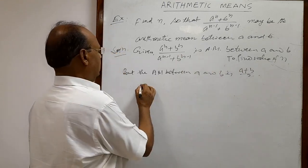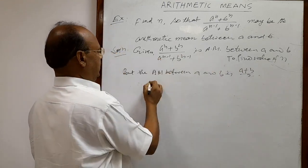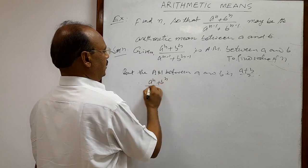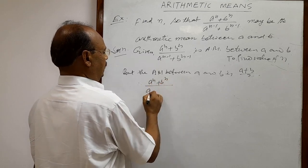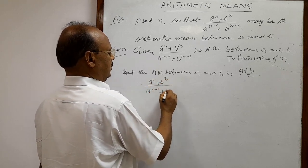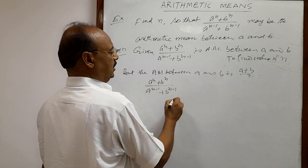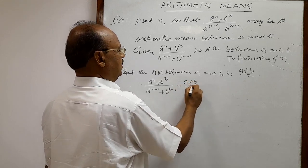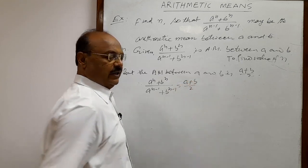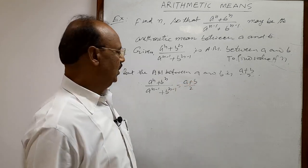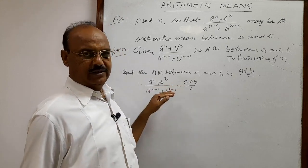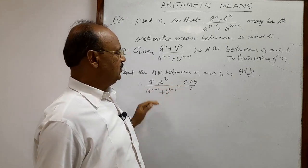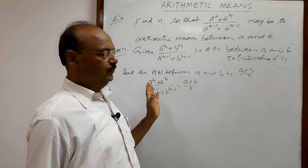Therefore we can write: a to the power n plus b to the power n, upon a to the power n minus 1 plus b to the power n minus 1, is equal to a plus b divided by 2. Now we have to simplify this expression and after simplification we can get the value of n.